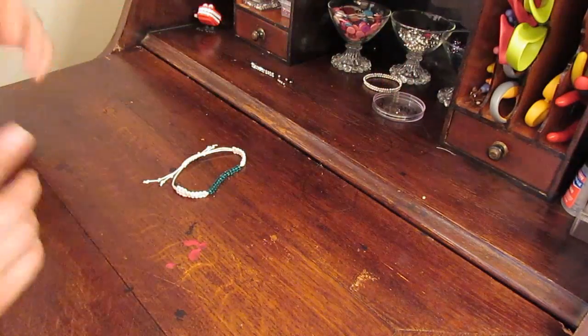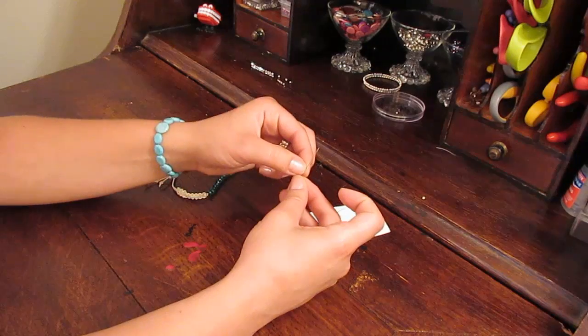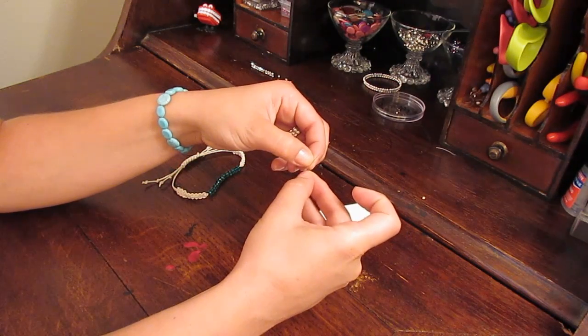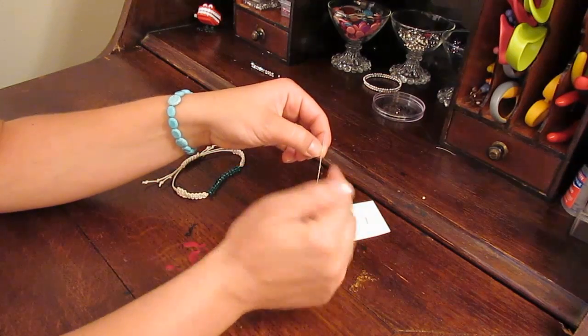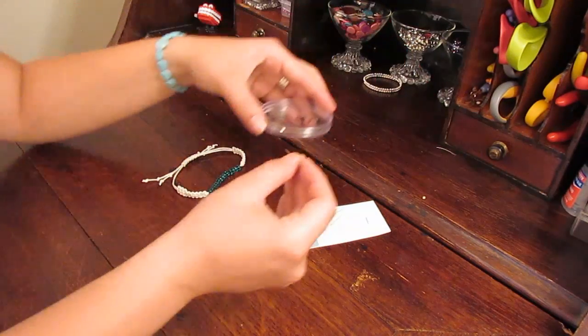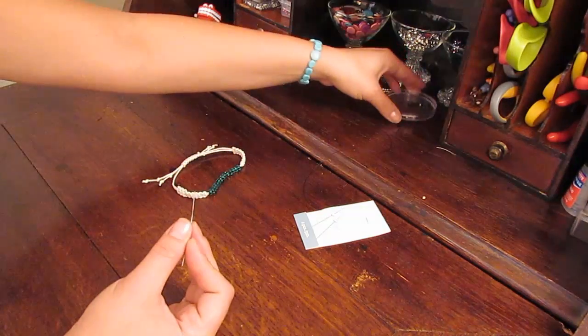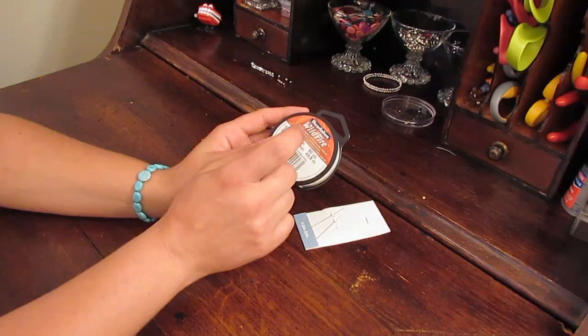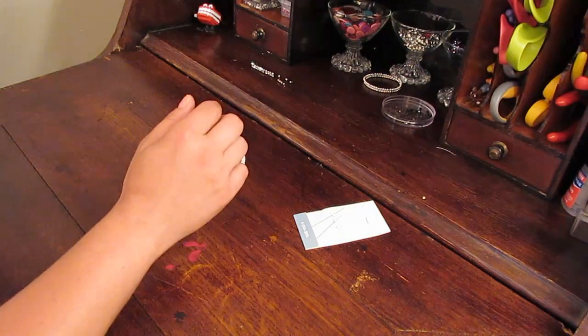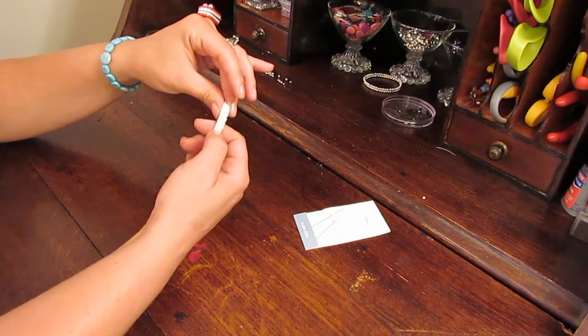A couple of things you will want are beading needles and they are kind of like a bow. This just helps for threading your beads onto your beading cord. It's a fairly sturdy beading cord and you'll want it to match whatever color you're going to do your bracelet.